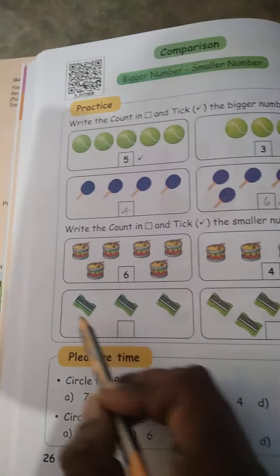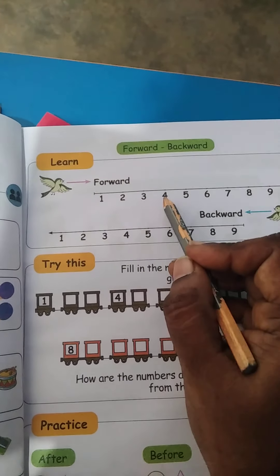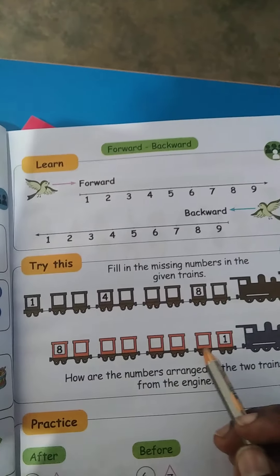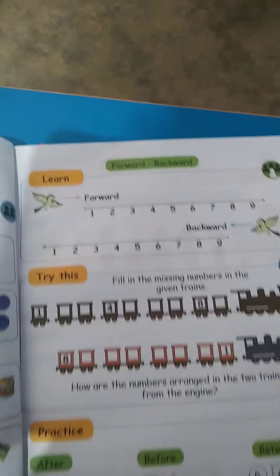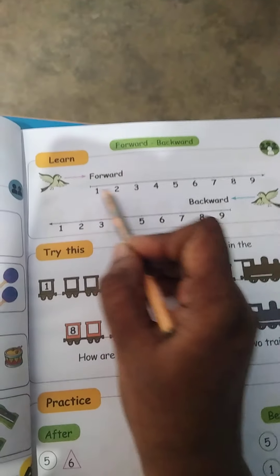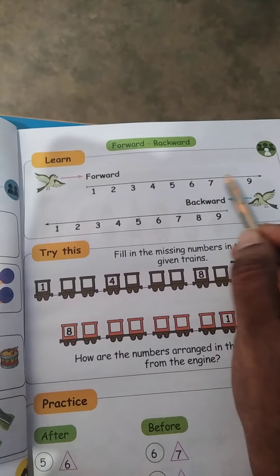Forward, backward. Line 1 in the forward. The forward graph, say: 1, 2, 3, 4, 5, 6, 7, 8, 9. Backward, I will go to this page: 9, 8, 7, 6, 5, 4, 3, 2, 1. This is backward.